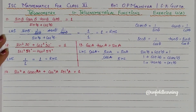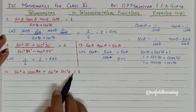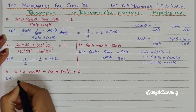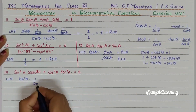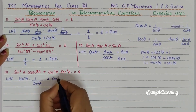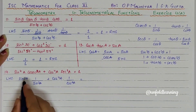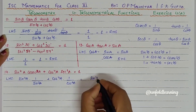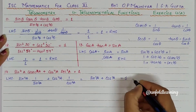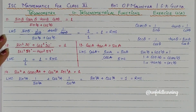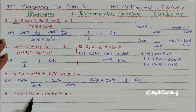Next is question number 14: sin⁴A · cosec²A + cos⁴A · sec²A is equal to 1. Taking LHS, we have sin⁴A multiplied by cosec²A plus cos⁴A multiplied by sec²A. Working through the simplification, this gives us 1, which is the answer.